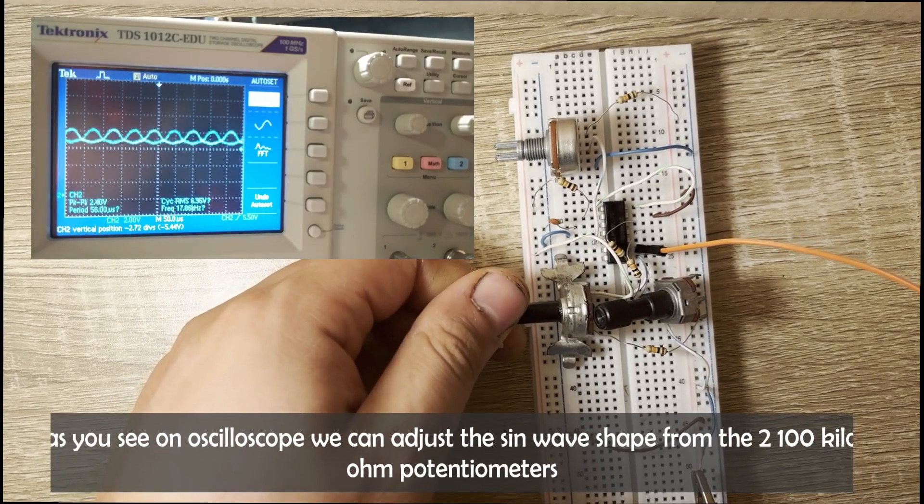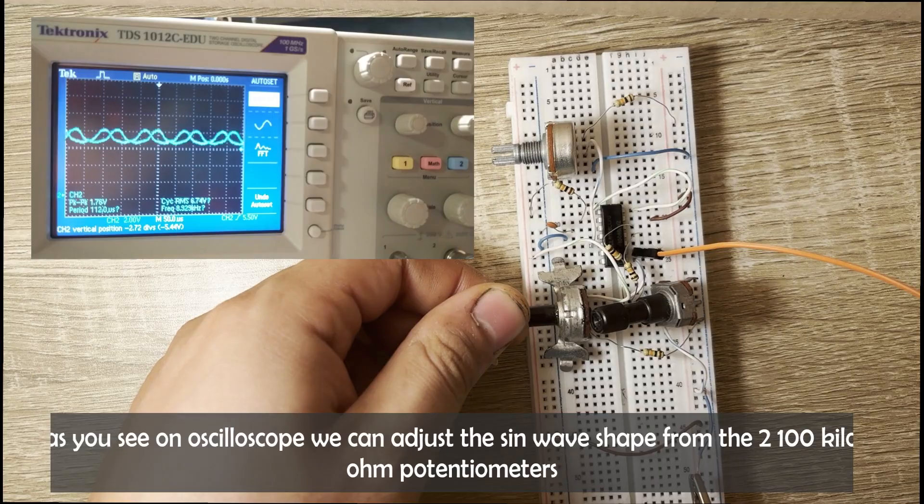As you see on the oscilloscope, we can adjust the sine wave shape from the two 100 kOhm potentiometers.